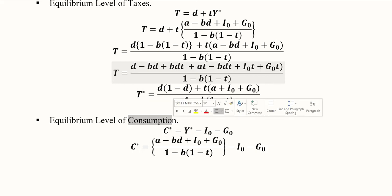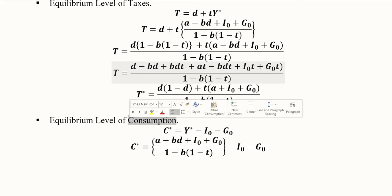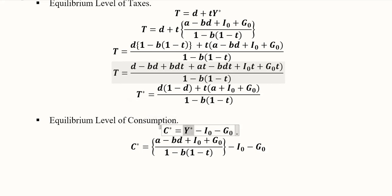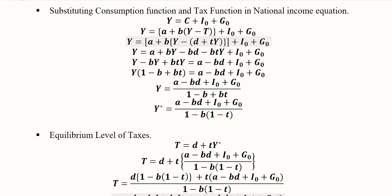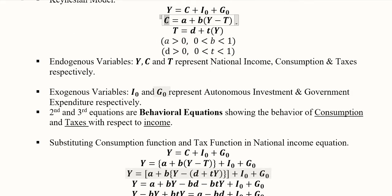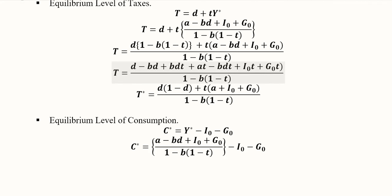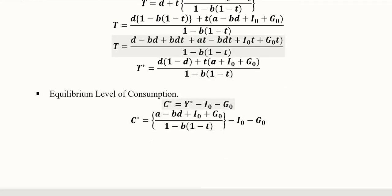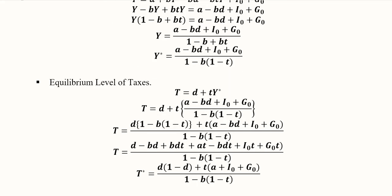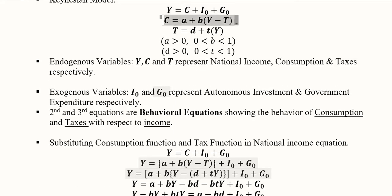Consumption C* is the third endogenous variable we need to find. Rather than substituting into the consumption function directly — which would require further LCMs and two substitutions of Y* and T* — we use a shortcut. We invert the definitional equation, since we already have Y*, I-naught, and G-naught, making this an easier approach.